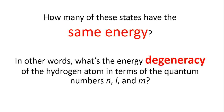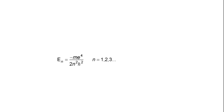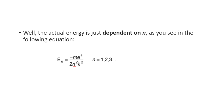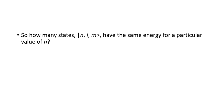Looking at the energy equation, we can see there is only the parameter n — there is no L or m value. So the actual energy depends only upon n and is independent of L and m. We can therefore ask the degeneracy as: how many states of n, L, and m have the same energy for a particular value of n?